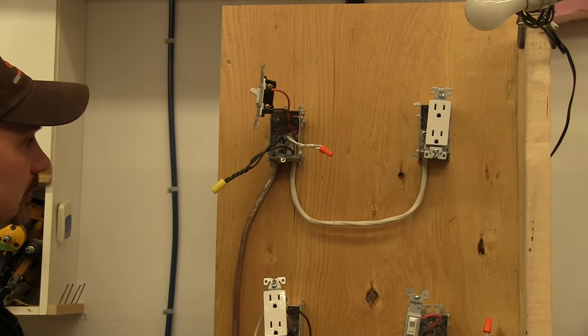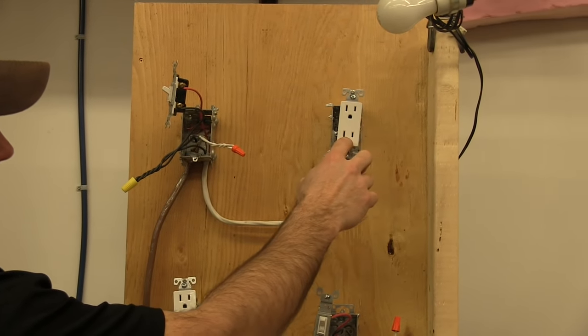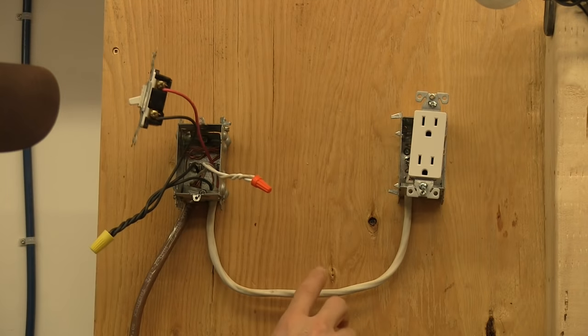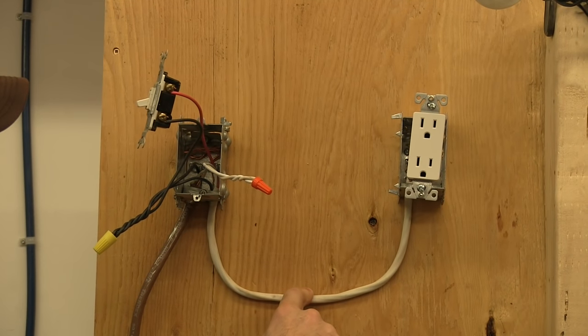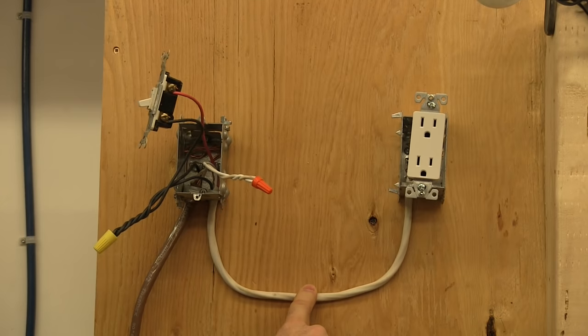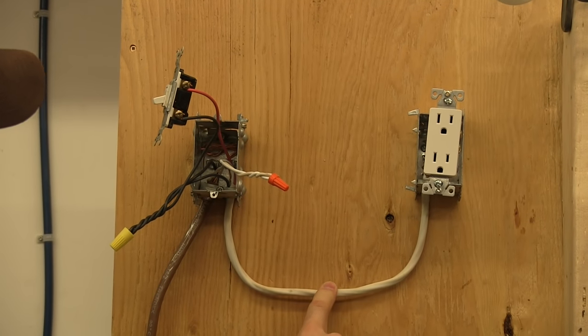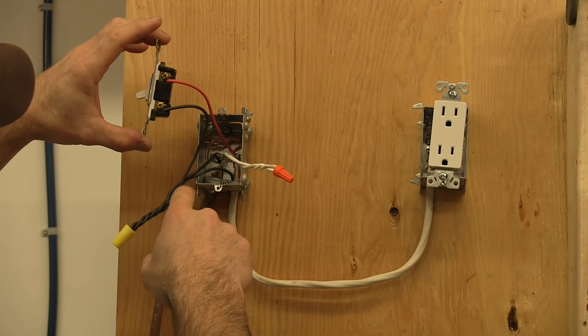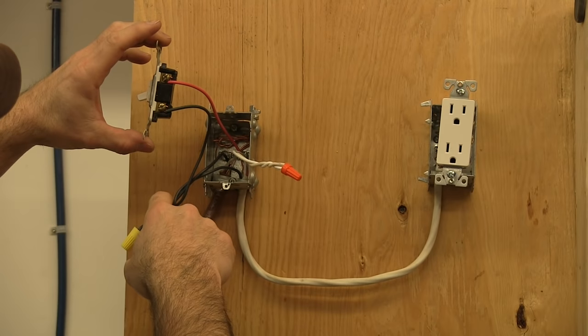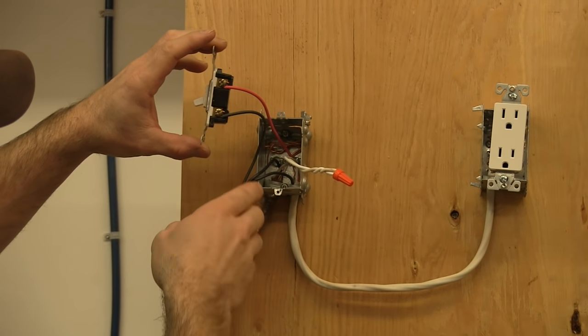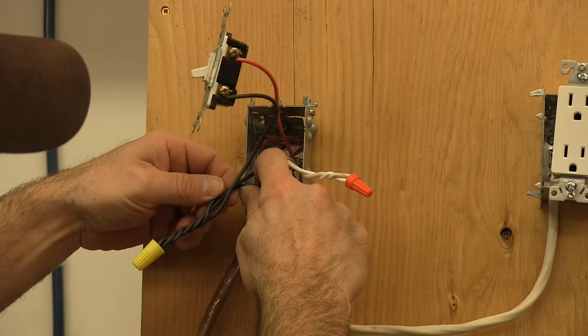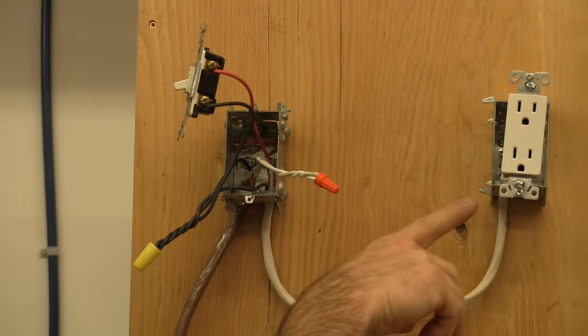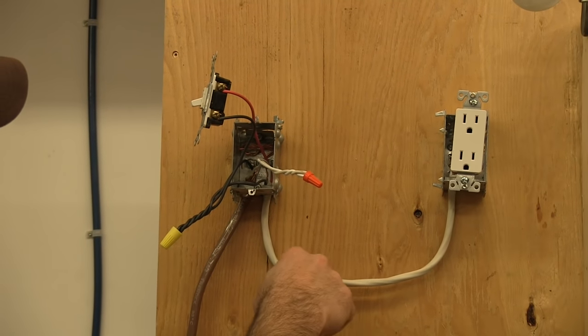In this example up here, if we wanted to have both of these powered only when the switch is turned on, what we would have to do is we wouldn't need 14-3 wire in here—we'd only need 14-2 wire or 12-2, depending on your situation. So everything right here would be all the same other than one of these wires wouldn't be in there. One of these black wires that was coming from over there or going over there wouldn't be needed. So you'd have a 14-2 here only.